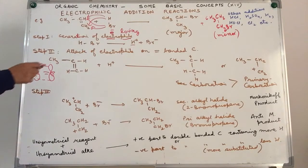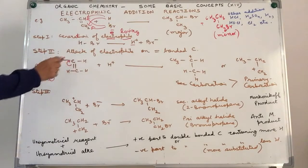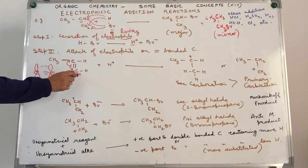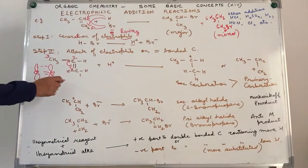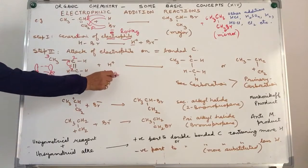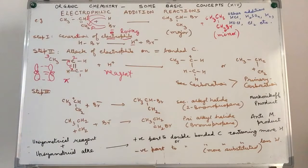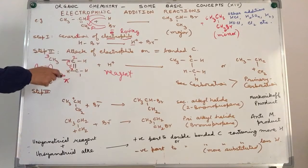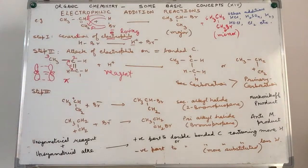There are two possibilities here. Either the pi electron cloud moves towards carbon number 2 or it moves towards carbon number 1. This type of movement of pi electron cloud in the presence of a reagent is given a specific effect — it's the electromeric effect. The electromeric effect is the temporary movement of pi electrons in a molecule due to the presence of a reagent.